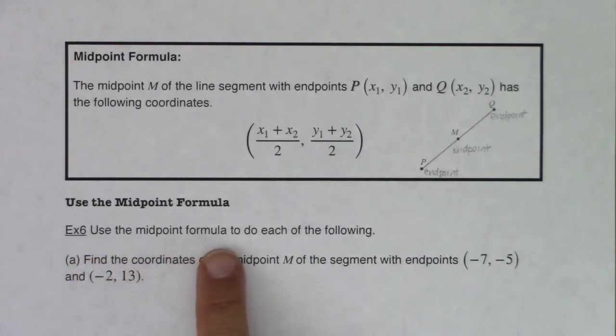Use the midpoint formula to do each of the following. Find the coordinates of the midpoint of the segment with endpoints negative 7, negative 5, and negative 2, 13. So what I'm going to do before I even go through the algebra is I want to graph it just to get an idea of what this is going to look like.